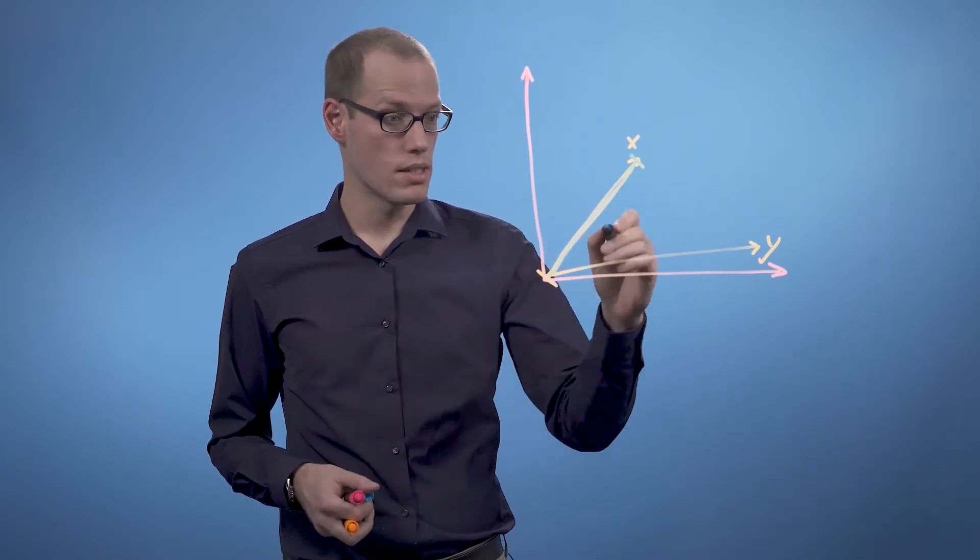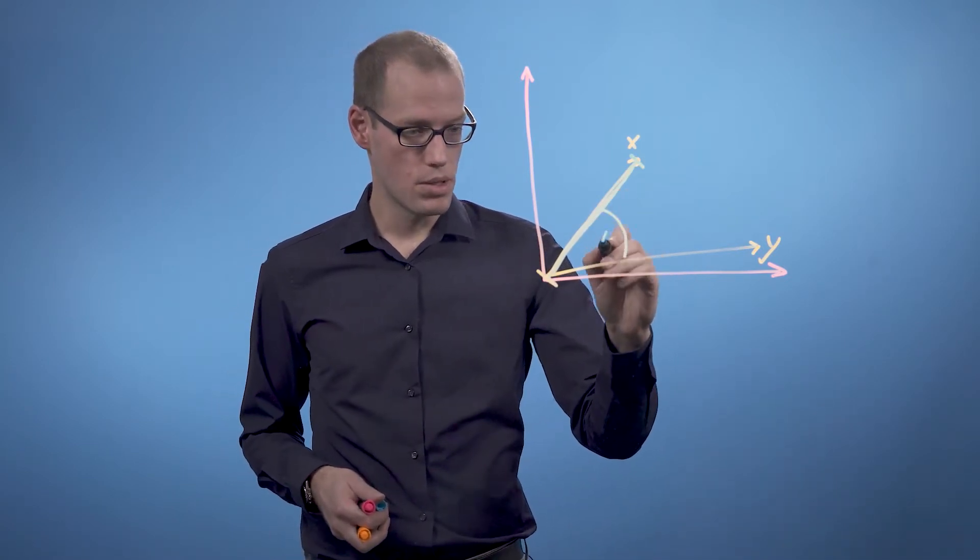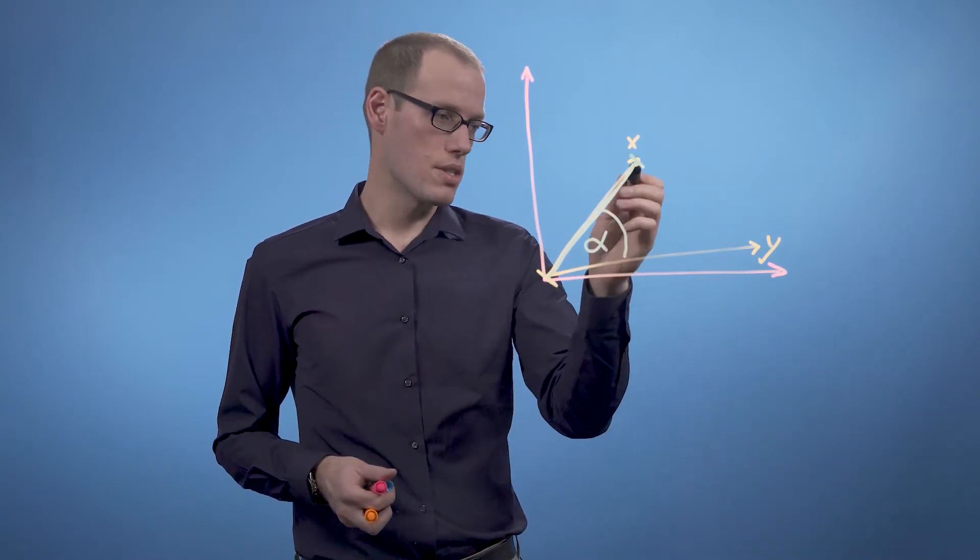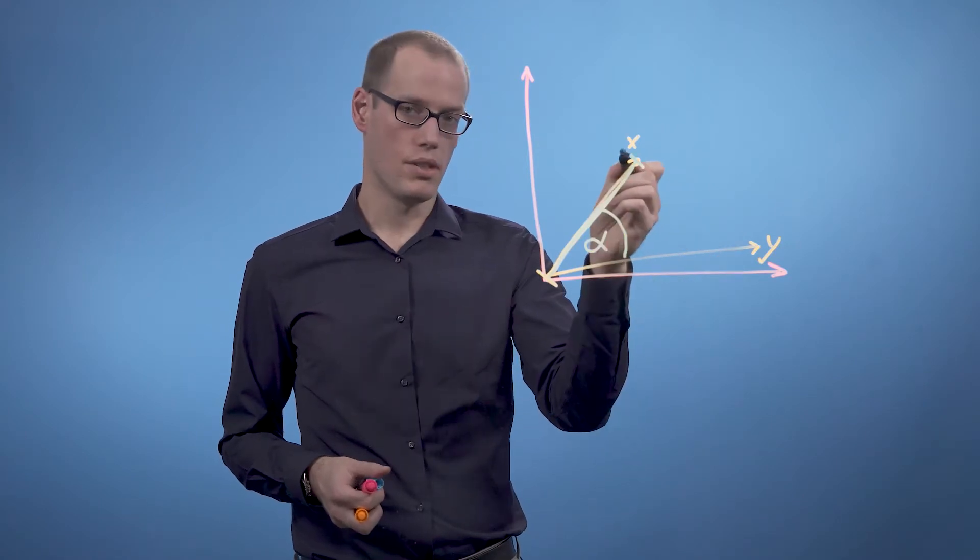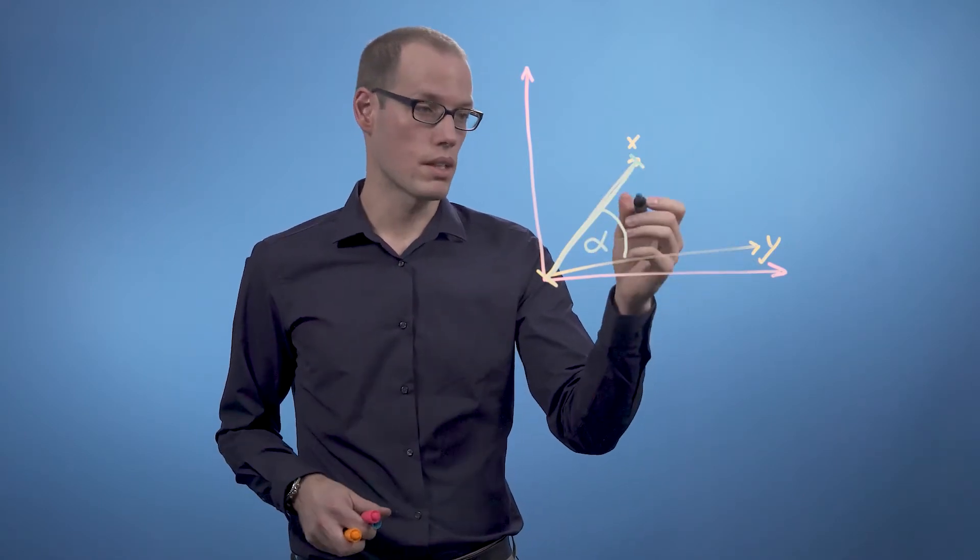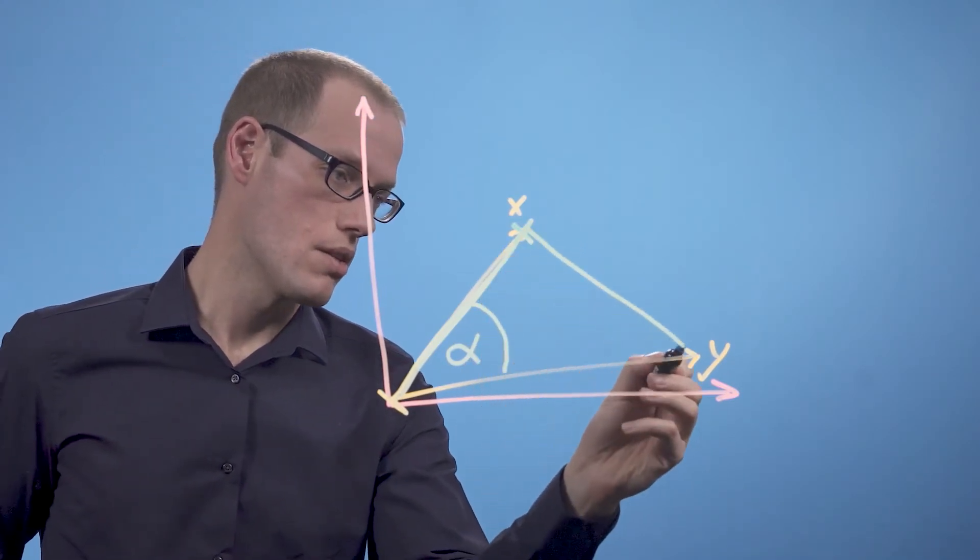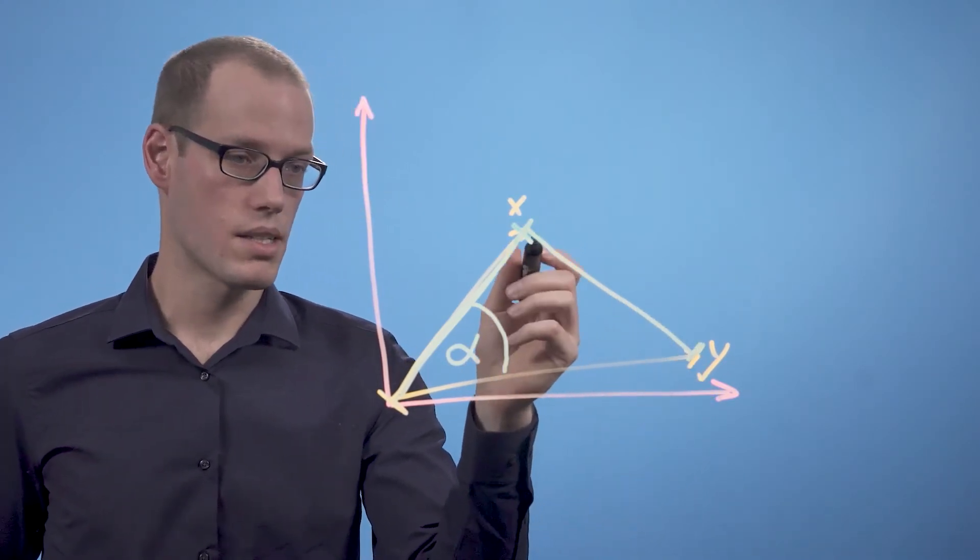We will be looking at angles between two vectors, and we would be looking at distances between individual data points or vectors in this vector space. So in this case, we would be interested in the distance between x and y.